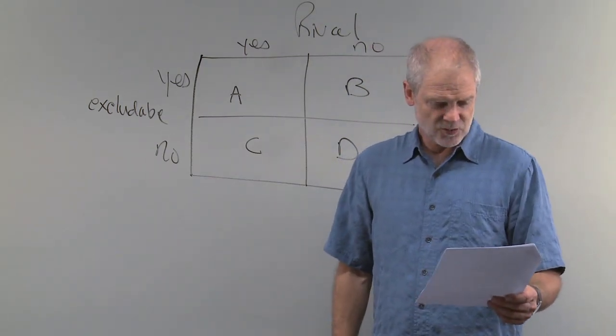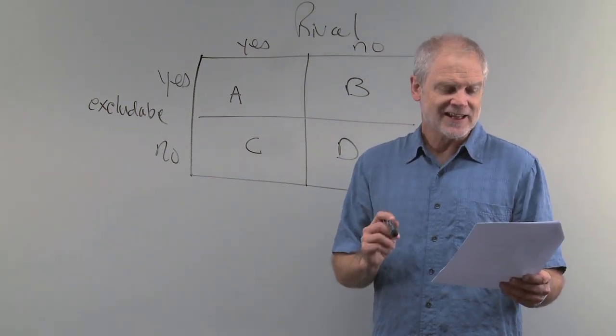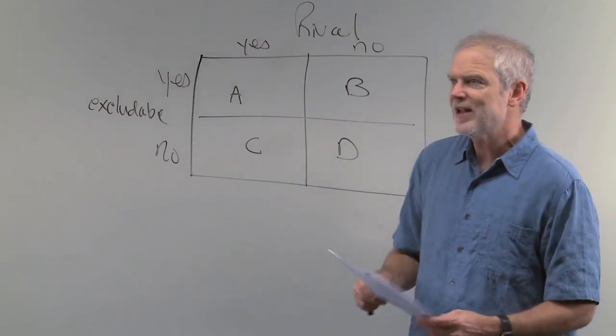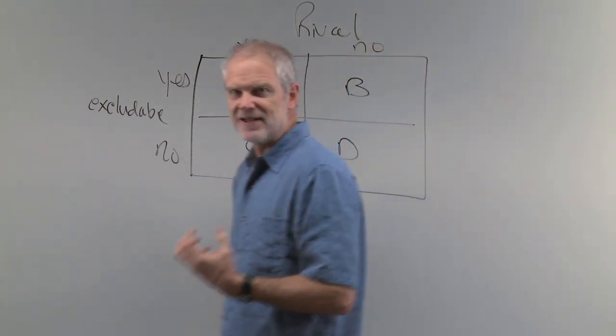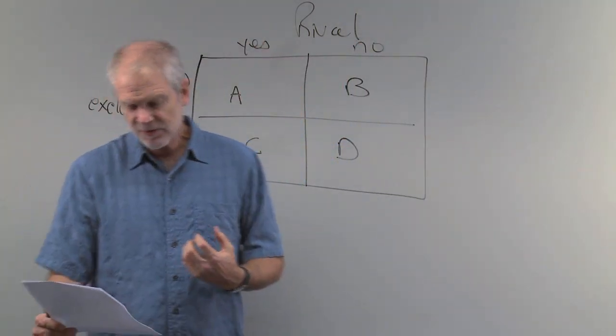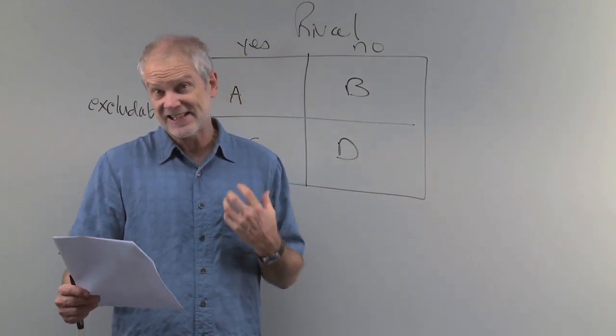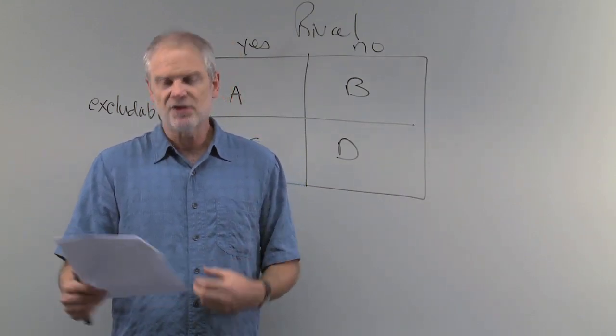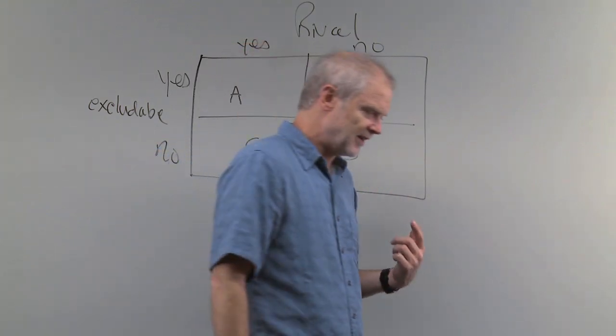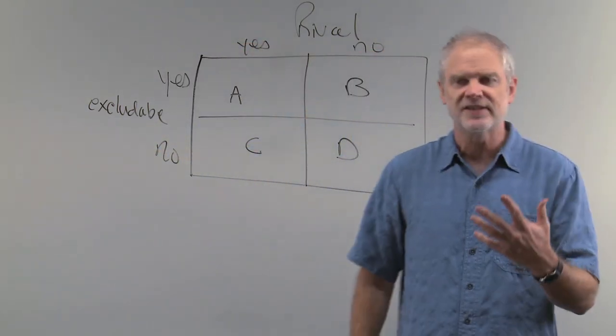Number 10, last one. Markets fail to allocate resources efficiently when? So when does the market break down? The answer here, number 10 is C. Property rights are not well established. So we talked a little bit about it in class and your book gives you an example.